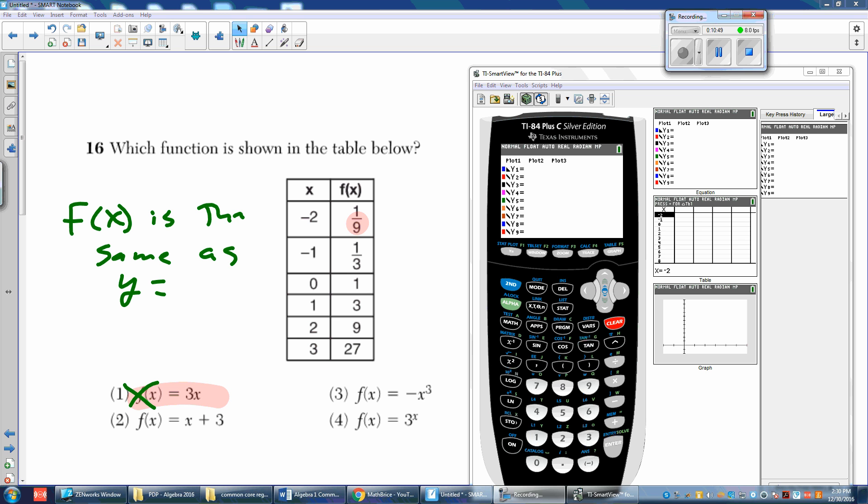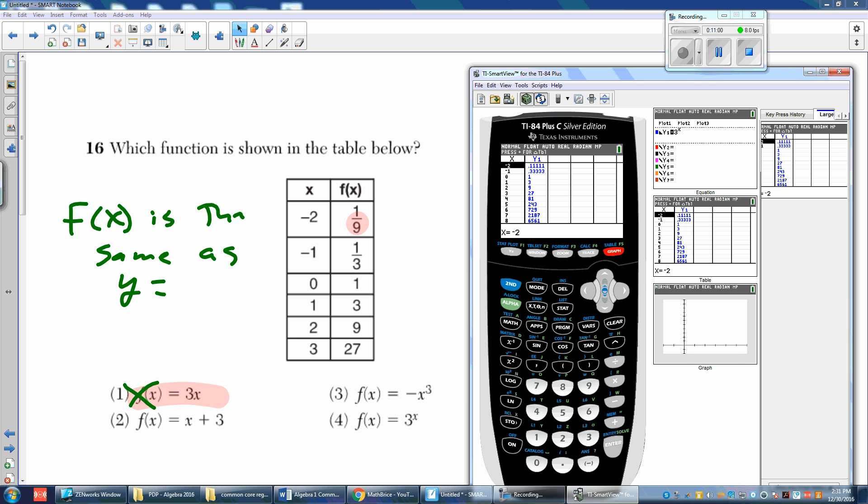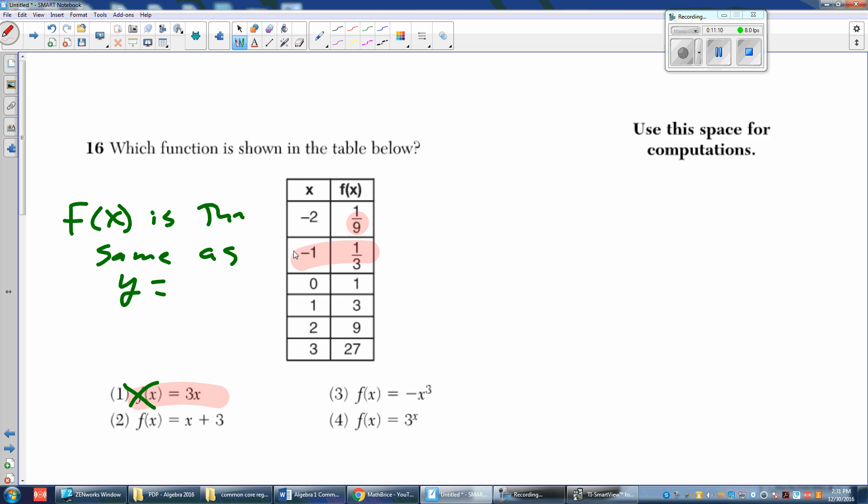Y equals 3 exponent X. Hit the right arrow to get out of that. Now we're going to hit second table. We're already at negative 2, and it gives me 0.11111 and 0.33333, and then the next numbers are 0, 1. That matches. 0, 1 matches. And then 1, 3 matches. 2, 9 matches, and 3, 27 matches.